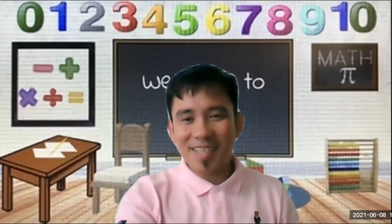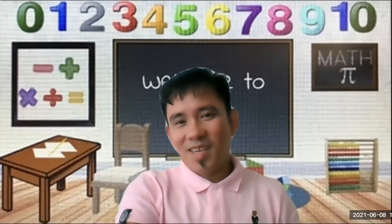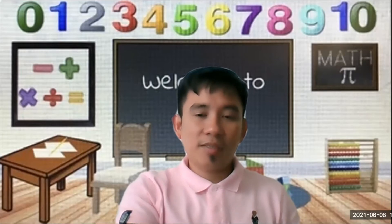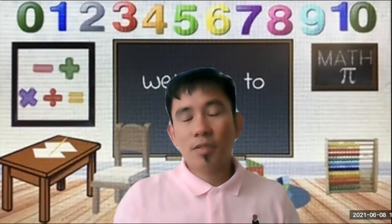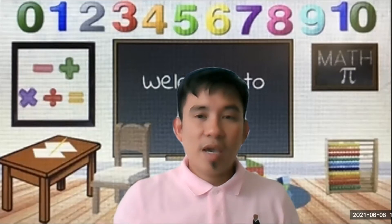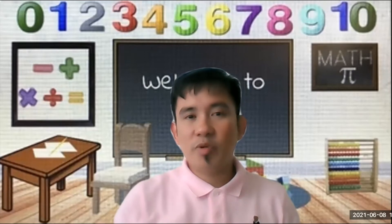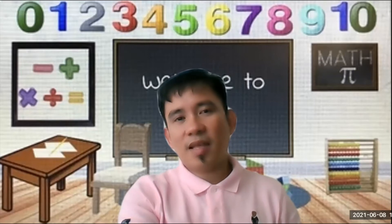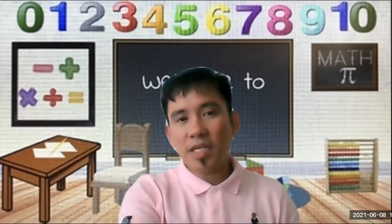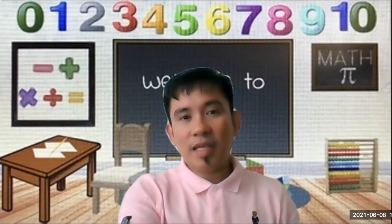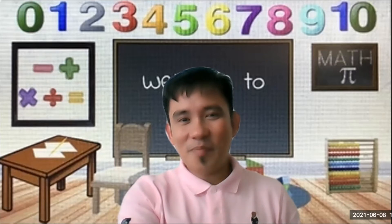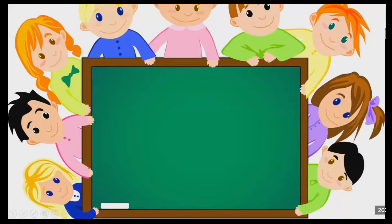Welcome back to math class. Today's lesson is all about place value and expanded form. Last video we discussed counting numbers up to one thousand, and I told you to memorize the word numbers and practice writing in Arabic numerals up to one thousand. This time we will identify the place value, the digit value, and the expanded form — we will expand the numbers.